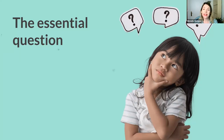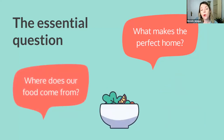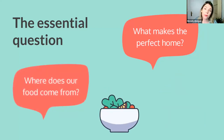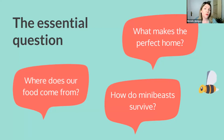I think the best way to explain this is through examples. With the topic of home, for example: 'What makes a perfect home?' Another question could be: 'Where does our food come from?' Or 'How do minibeasts survive?' Notice how broad these questions are and how they can be answered in different ways, depending on what we ask students to investigate.